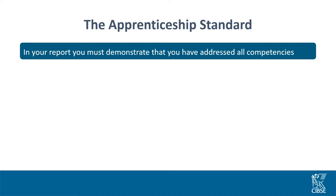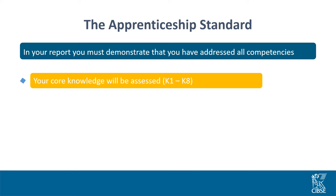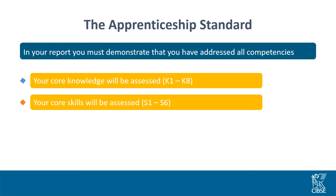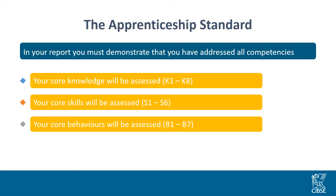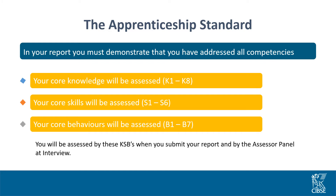So how many KSBs are there? I'll break this down into three sections: the core knowledge, the core skills, and the core behaviours that will be assessed. These are broken down into further subsections. The complete KSBs — knowledge, skills and behaviours — is made up of 21 points. When you attend your interview, the two assessors will be marking you against the KSBs. You do need to make sure you meet all the competencies in this written report.